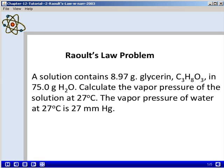In this problem, we're going to use Raoult's Law. We are given a solution that contains 8.97 grams of glycerin, C₃H₈O₃, and 75.0 grams of water. We want to calculate the vapor pressure of this solution at 27 degrees Celsius. We are told that the vapor pressure of pure water at 27 degrees Celsius is 27 millimeters of mercury.